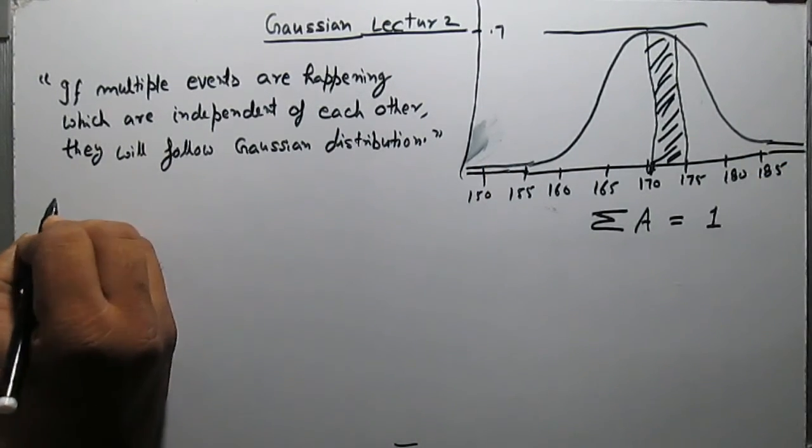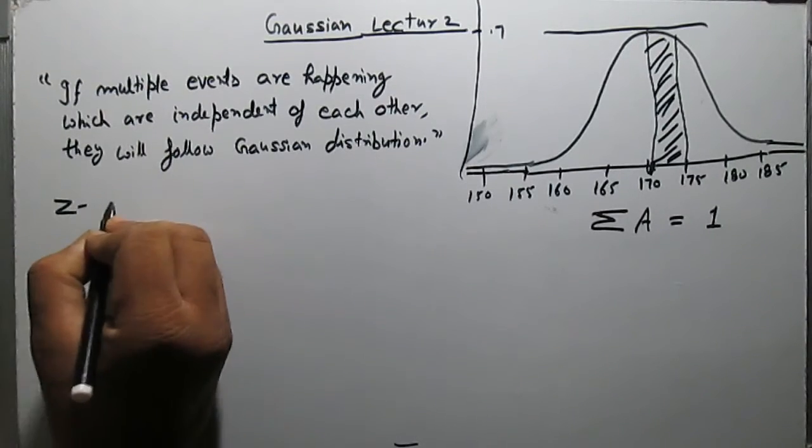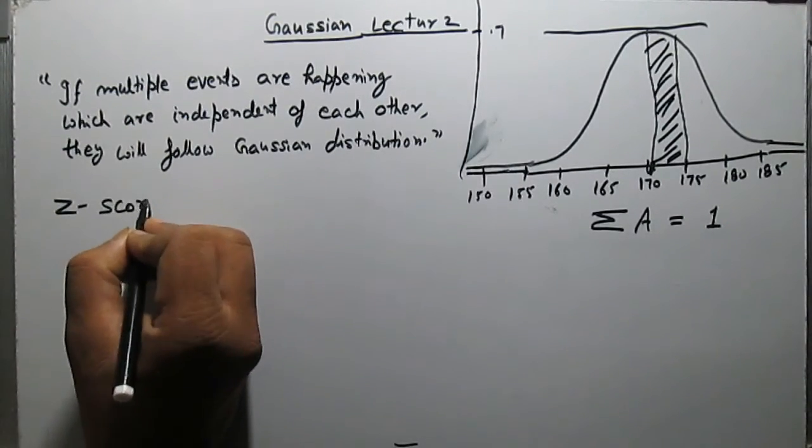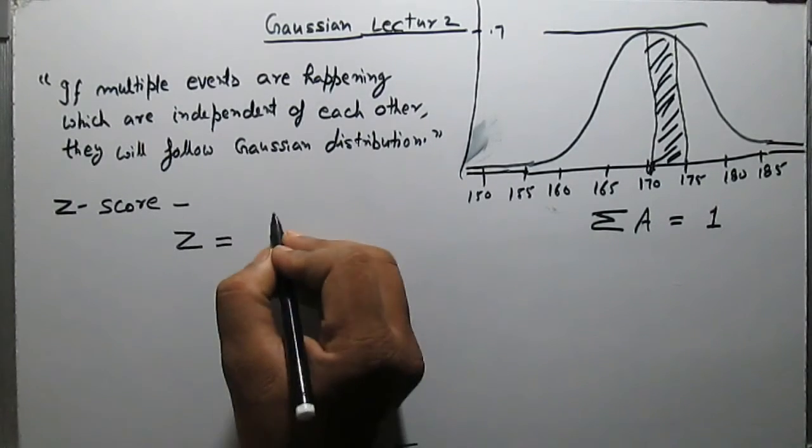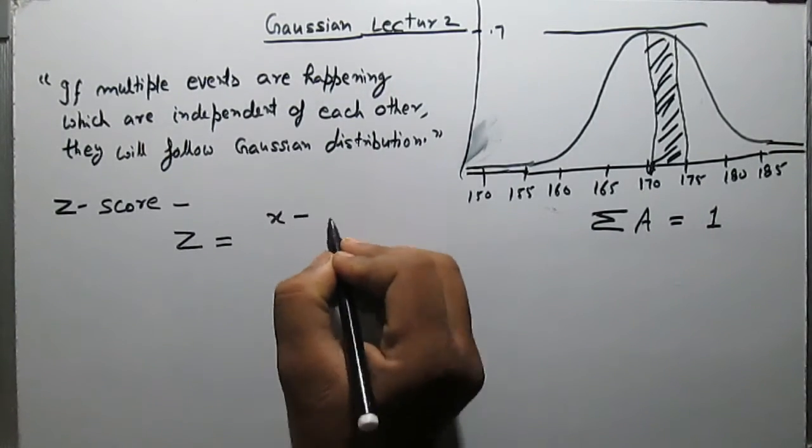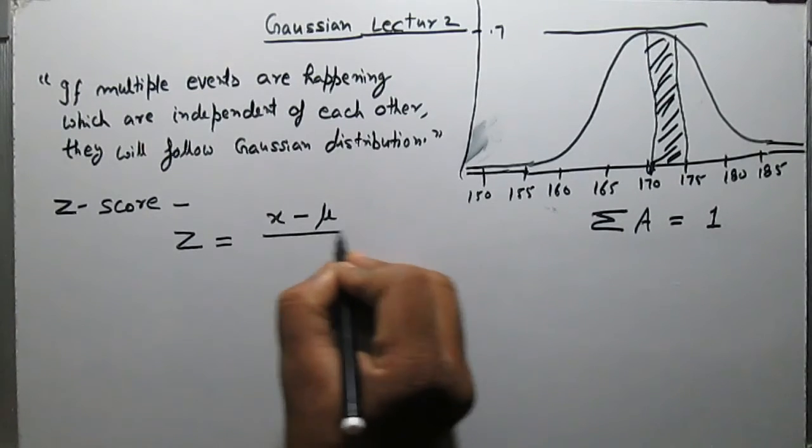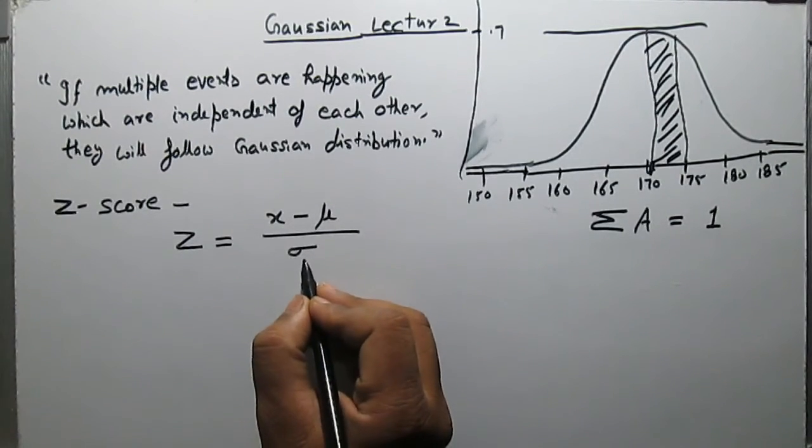Now another important quantity which is called z-score. It is defined as z equals x minus mu, which is the mean, divided by sigma, the standard deviation.